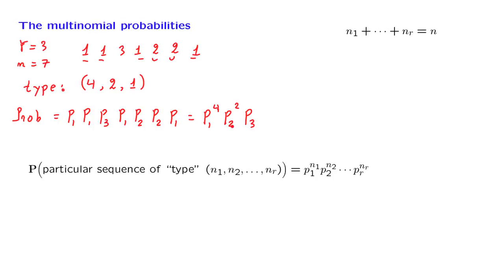Generalizing from this example, we realize that the probability of obtaining a particular sequence of a certain type is: for each color, the probability of that color raised to the power of how many times that color appears in the sequence. So any particular sequence of type (n1, n2, ..., nr) has probability p1^(n1) times p2^(n2) times ... times pr^(nr).